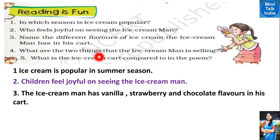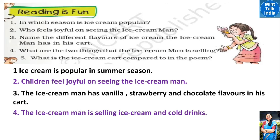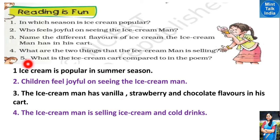Question four: What are the two things that the ice cream man is selling? (Ice cream man अपनी गाड़ी में कौन सी दो चीजें बेच रहा है?) Answer: The ice cream man is selling ice cream and cold drinks.